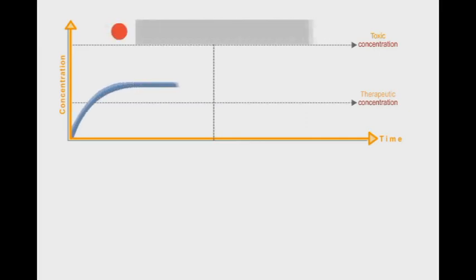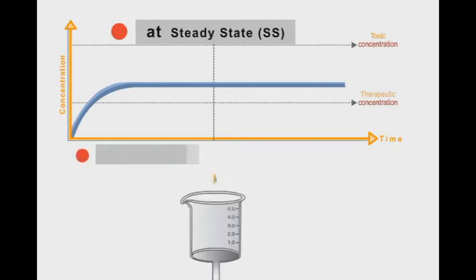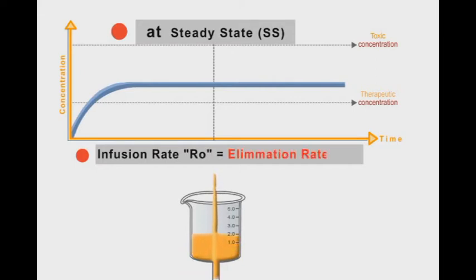At the steady state, which occurs after about four half-lives, the infusion rate is equal to the elimination rate. Therefore, the plasma concentration of the drug will remain constant as long as there is no change in the infusion rate.